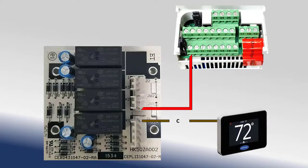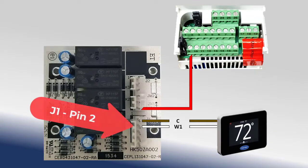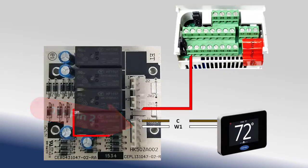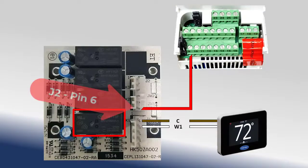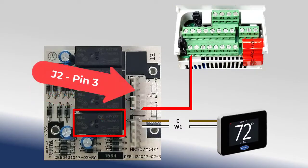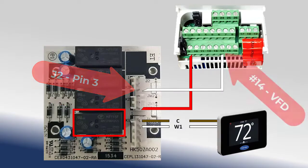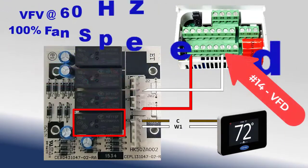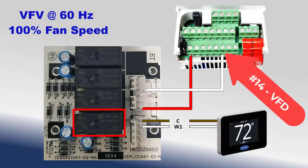During heating operation, an internal path carries the 24-volt AC W1 signal to the fan control board at J1, pin 2, in turn closing relay K1. When the K1 relay is energized, the 24-volt DC signal from J2 terminal pin 6 is closed to J2, pin 3, which is returned to the VFD at terminal 14. This initiates a command for the VFD to come to 60 Hz, or 100% of fan speed.